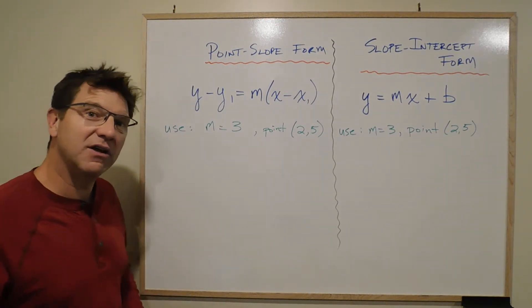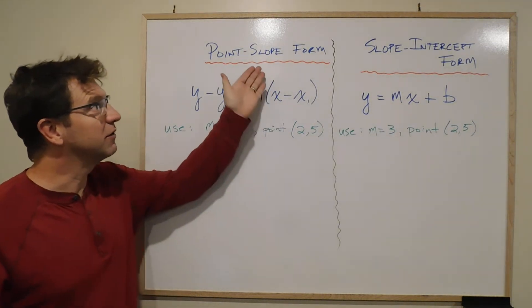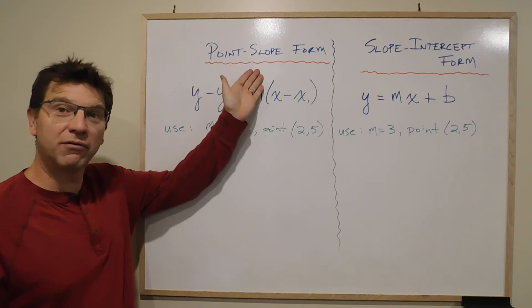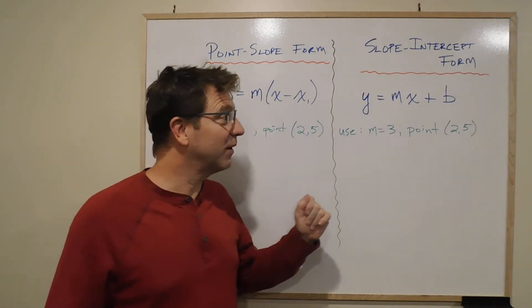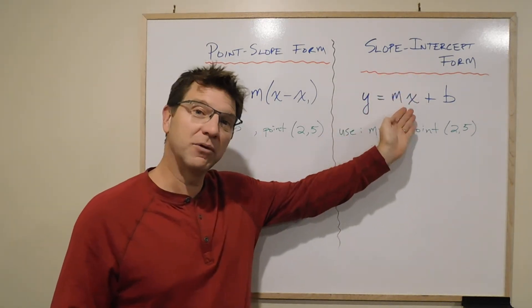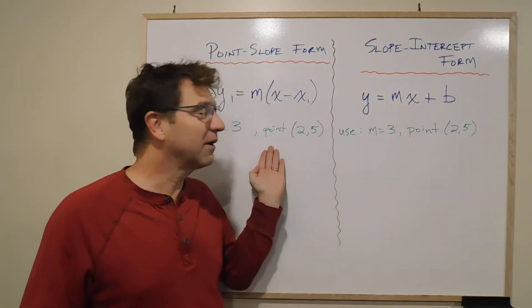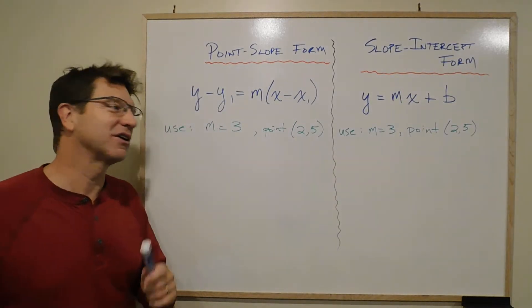So if you're asked to find the equation given the slope and a point using point-slope form, you would do it this way. If you're asked to find an equation using the slope-intercept form, you'd do it this way. We're given the exact same information, so we'd better get the exact same equations in the answer. Let's have a look.